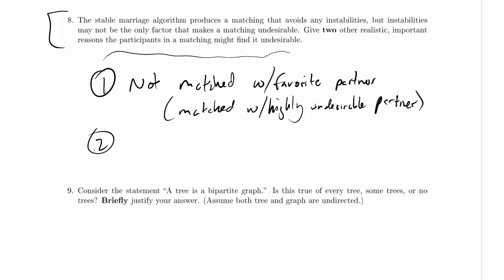What's another realistic important reason that participants in a matching might find it undesirable? Another good example, and there are lots, by the way, but another good example that brings in our knowledge of how the algorithm works is participants on one side may together demand their optimal result.